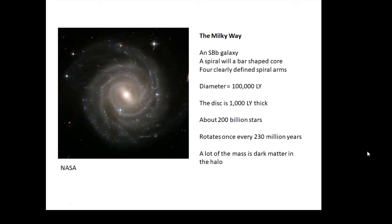Some facts about the Milky Way: it's an SBB galaxy, a spiral with a bar-shaped core and four clearly defined spiral arms. Its diameter is about 100,000 light years, the disk is about 1,000 light years thick, and it contains about 200 billion stars. It rotates once every 230 million years, and a lot of its mass is something called dark matter.